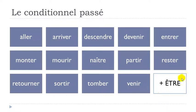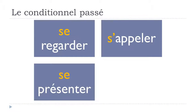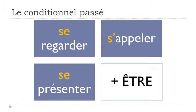So remember to use être with those verbs, conjugated at the conditionnel présent. The other group of verbs that always require être are les verbes réfléchis — reflexive verbs — such as se regarder, s'appeler, se présenter. They use être for the conditionnel passé, exactly as they do for the passé composé. It is always the same rule.